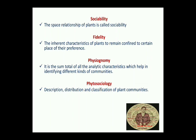Then, Physiognomy: it is the sum total of all analytical characteristics which help in identifying different kinds of plant communities. To identify plant communities, we look at morphology, external appearance, and other characteristics — the sum total of all these, which helps identify which community a plant belongs to, is called Physiognomy. Finally, Phytosociology means the description, distribution, and classification of plant communities.